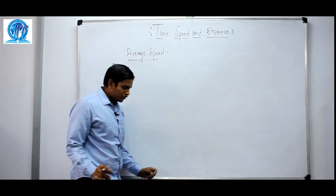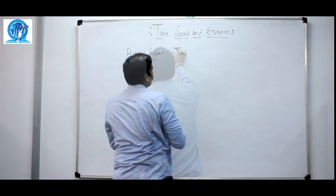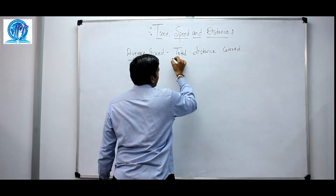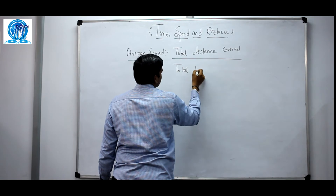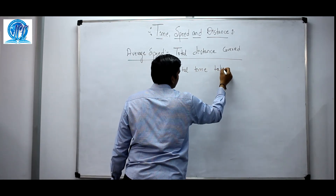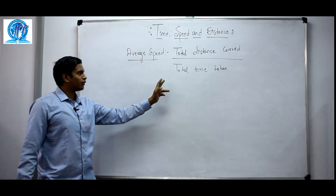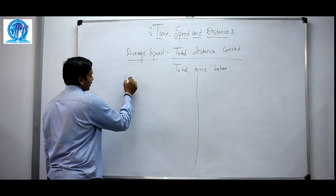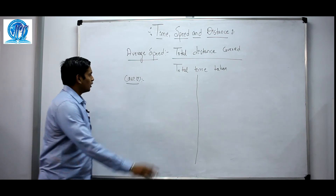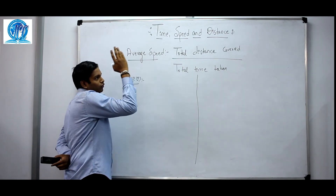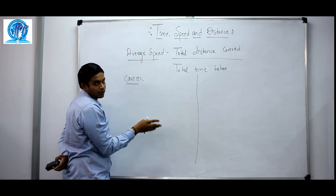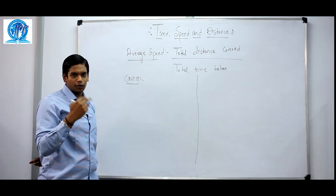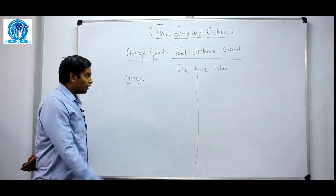Now let us discuss average speed. The average speed definition is: total distance covered divided by total time taken. For example, if 600 km is covered in 10 hours, the average speed is 600 divided by 10, which is 60 km per hour. We need to discuss two cases for average speed.